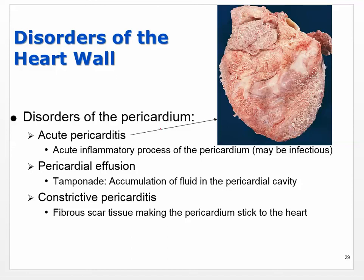Disorders of the pericardium include acute pericarditis — where that pericardial membrane becomes inflamed. The suffix -itis means inflammation, so pericarditis is inflammation of the pericardium. It can be caused by infections, but in general it's an acute inflammatory process of the pericardium.